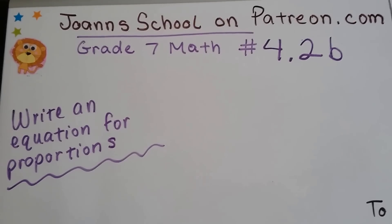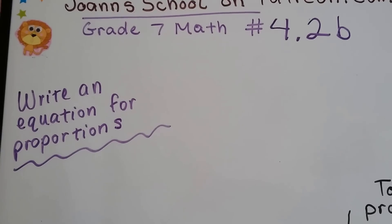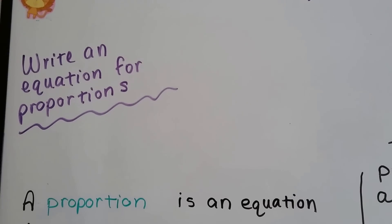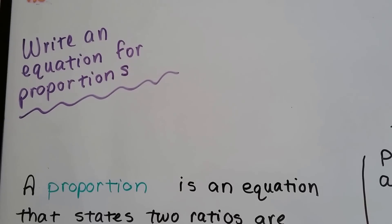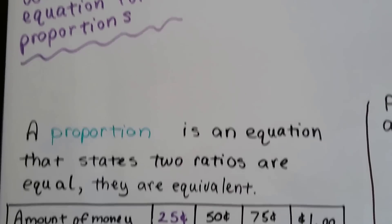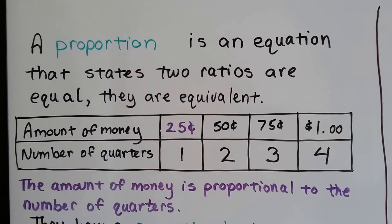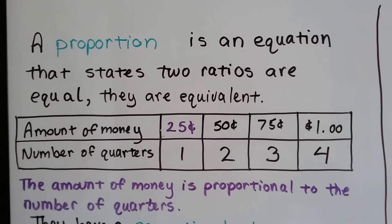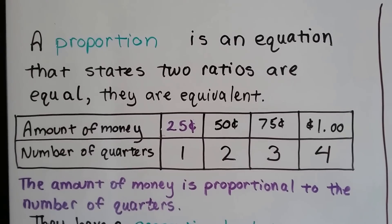Grade 7 math, number 4.2b. I'm going to continue talking about proportions and rates. How to write an equation for proportions. If you remember from the last video, a proportion is an equation that states two ratios are equal, that they're equivalent.